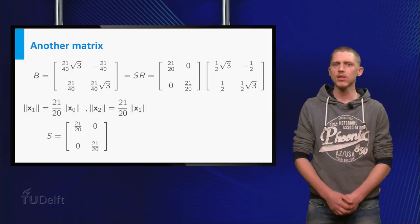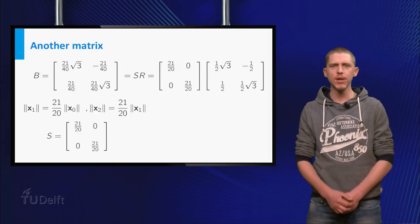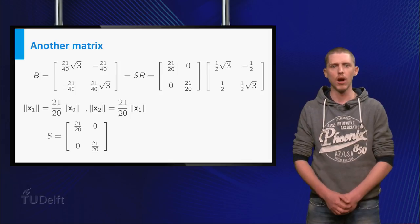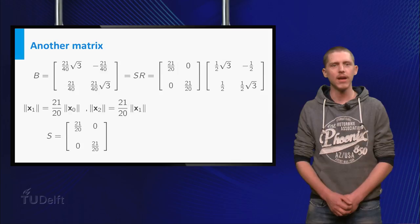You can show that B equals S times R, with R as shown. But this matrix is the matrix for rotation over 30 degrees counter-clockwise. So indeed, B is the composition of the scaling and the rotation.